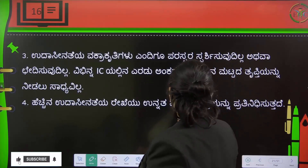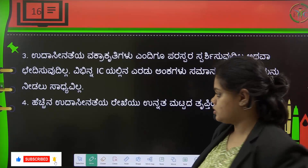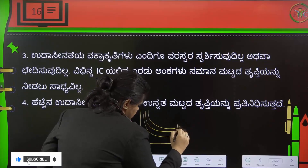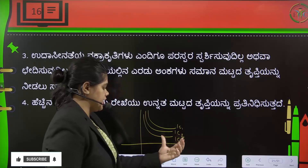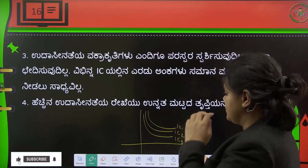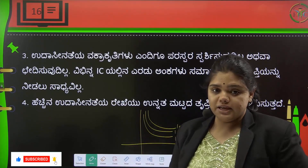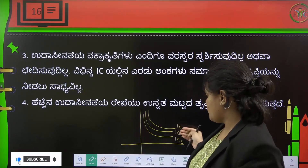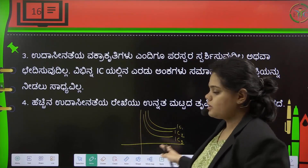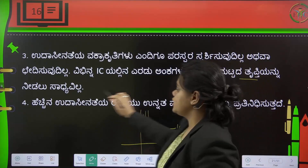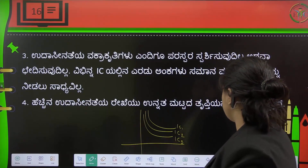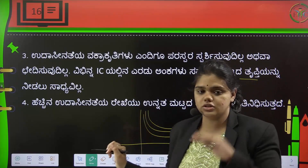The indifference curve is downward sloping. Different IC lines — IC1, IC2, IC3 — represent different levels of satisfaction. Two points on the same IC give the same level of utility. IC3 represents a higher level of satisfaction than IC2, which is higher than IC1. So IC1, IC2, and IC3 are the indifference curves ordered by increasing preference.